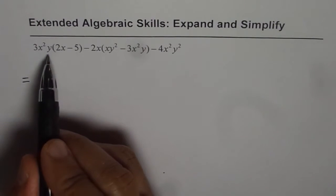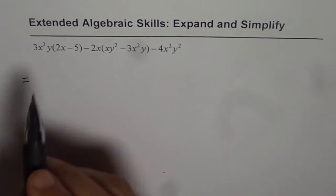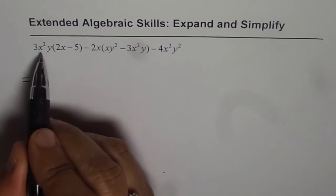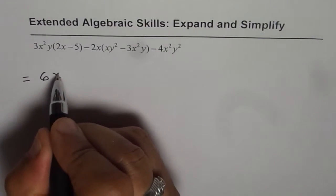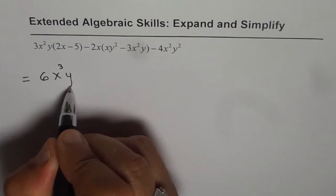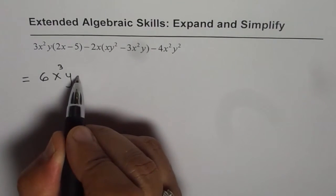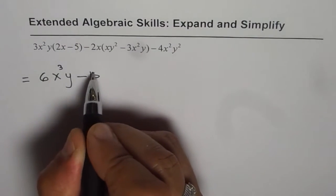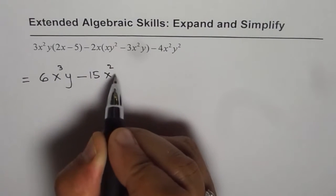3x²y gets multiplied by 2x. 3 times 2 is 6. x exponents increase by 1, we get x³. y as such. Now with minus, 3 times 5 is 15 and the variables we'll just copy them down.